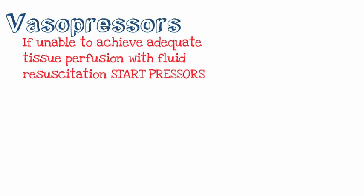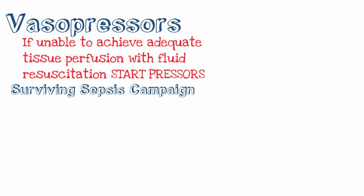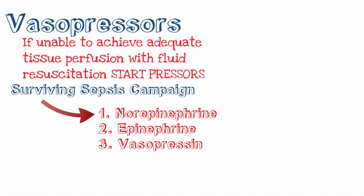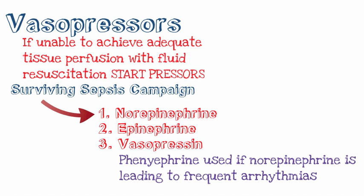Vasopressors: if you're unable to achieve adequate tissue perfusion with fluid resuscitation, start pressors. The Surviving Sepsis Campaign recommended starting with norepinephrine and working your way up to epinephrine and vasopressin, but really there is no benefit of one over the other. One thing to note is that phenylephrine is preferred if norepinephrine is causing tachyarrhythmias.